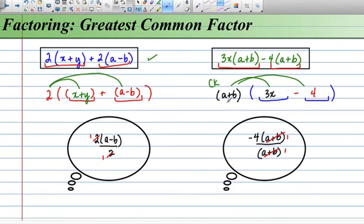A quick check. We have a plus b times 3x. Yes. And a plus b times negative 4. Yes. So we know we're right.